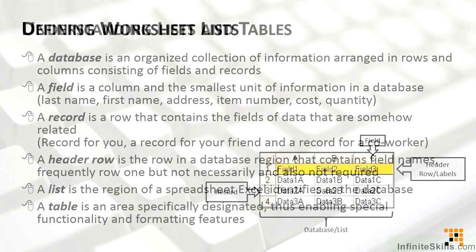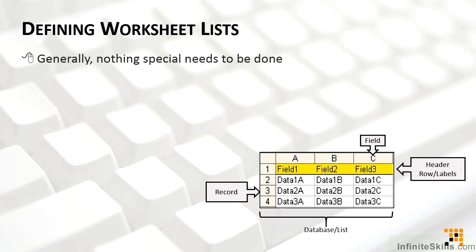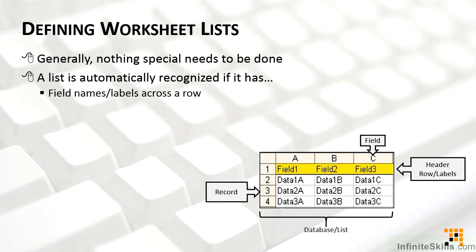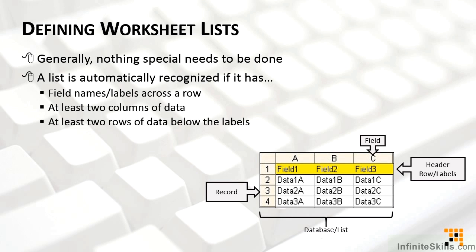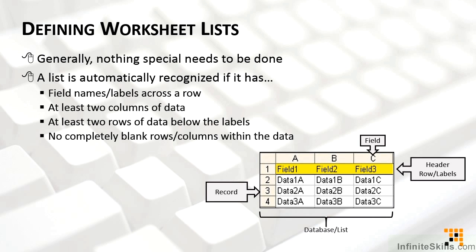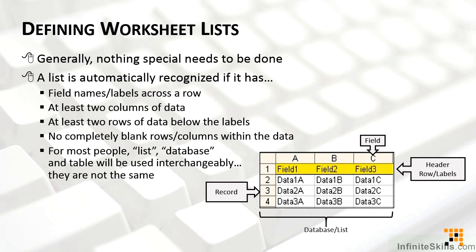Lists are very simple — we don't have to do anything to create them. Excel identifies that data belongs together because it has field names or labels across a row, at least two columns of data, and those field names are immediately followed by at least two rows of data. A very important concept: there can be no completely blank rows or columns within the data, because Excel will disregard anything to the right of an empty column or below an empty row.